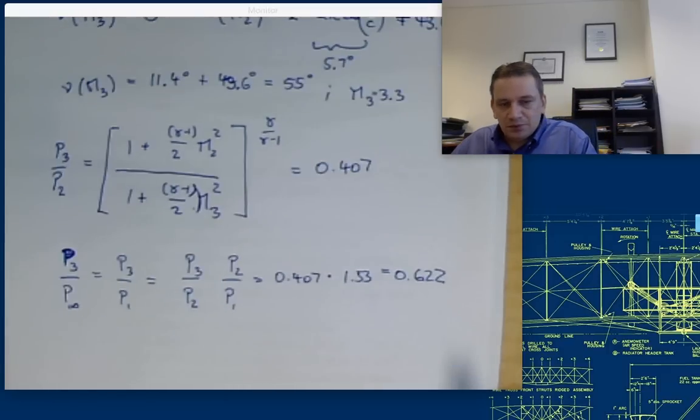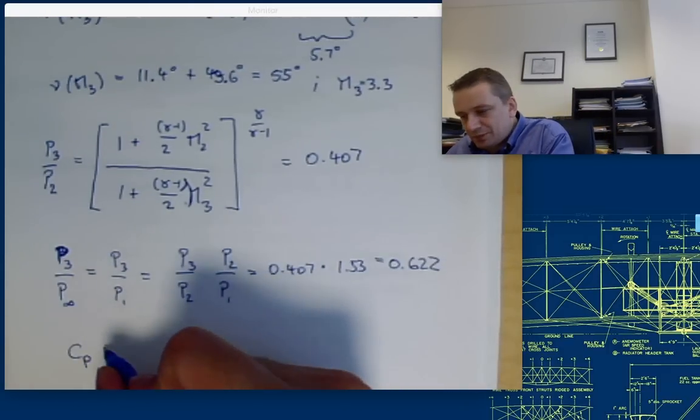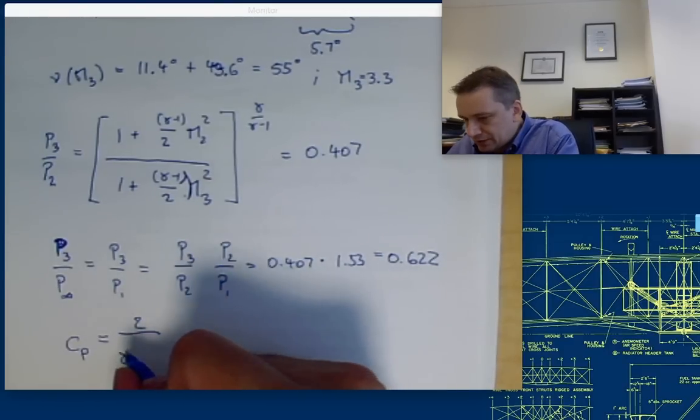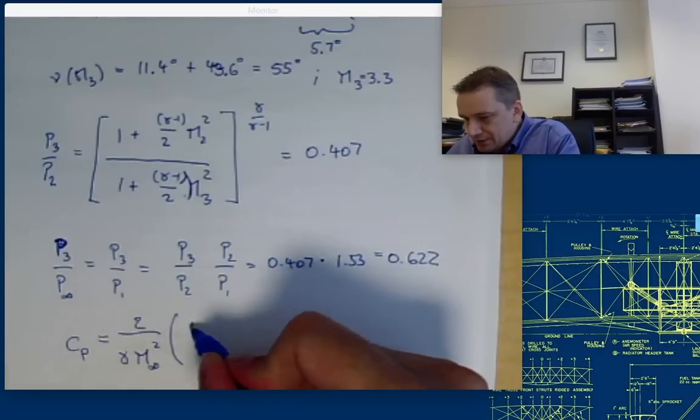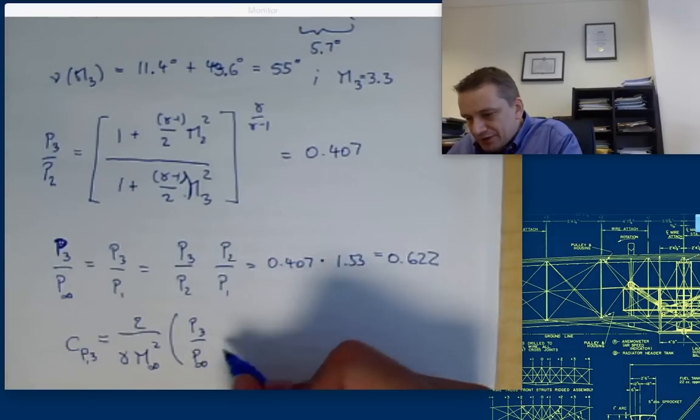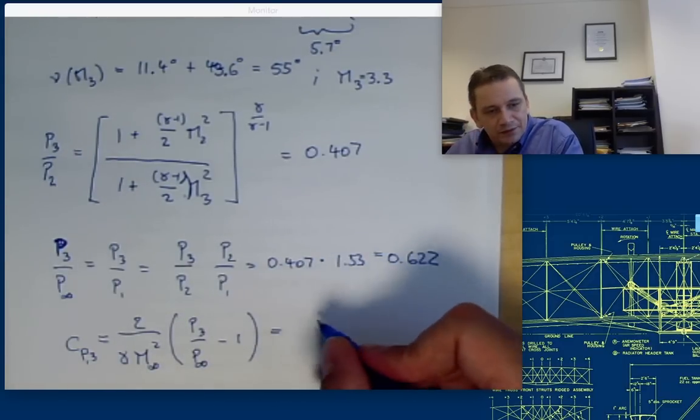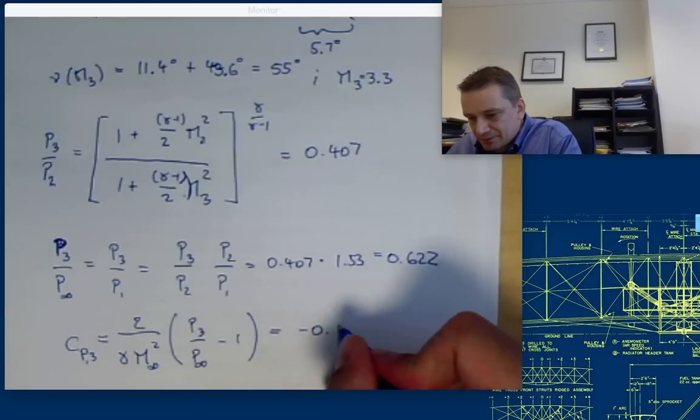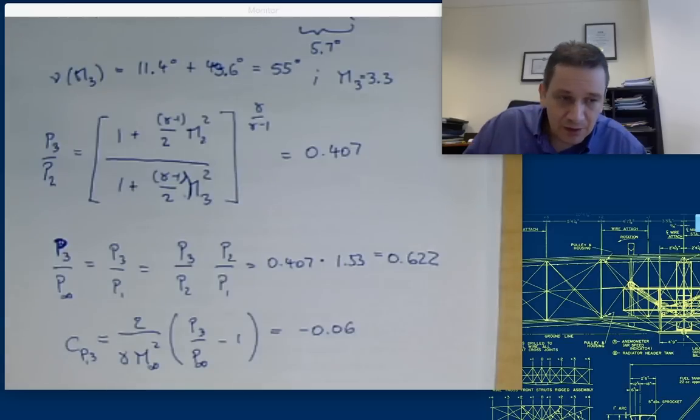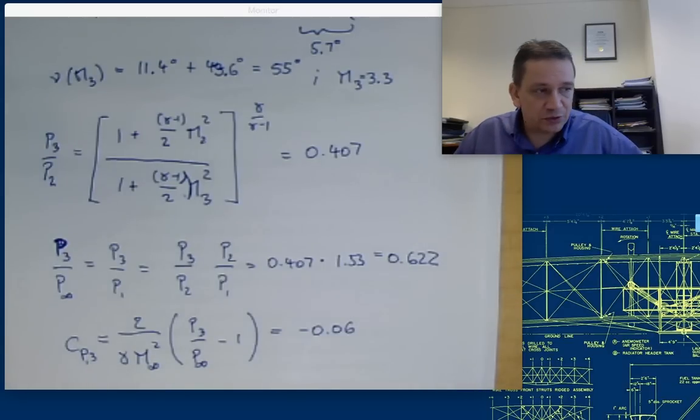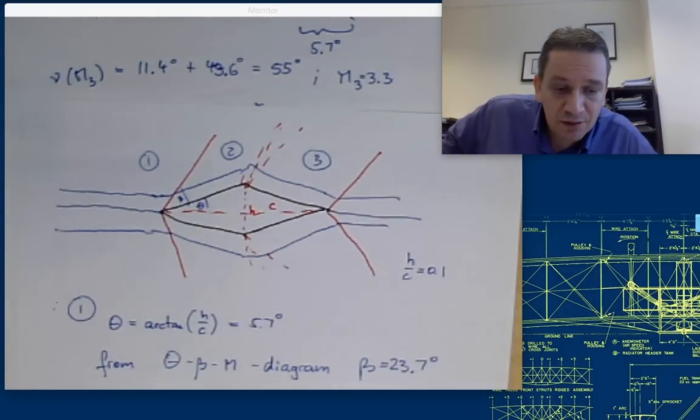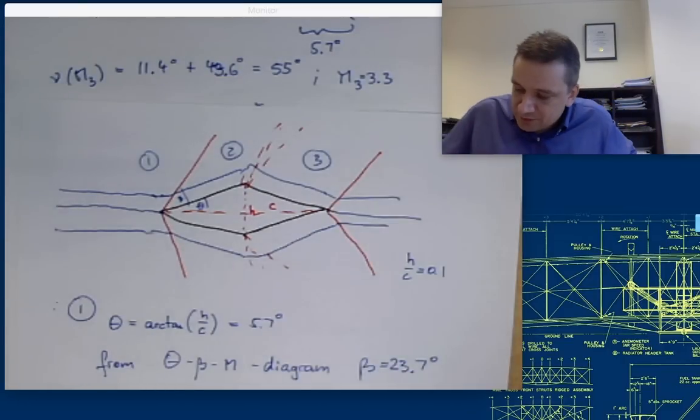We can now use again that from our pressure coefficient, Cp. It is then going to be 2 over gamma M infinity squared, P3 over P infinity minus 1. That is going to be minus 0.06. Okay. So, I now have determined the pressure coefficient over here, over here, over here and over here. Now, I can determine the drag and the lift coefficient.